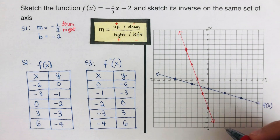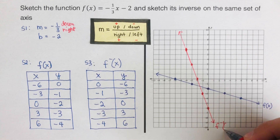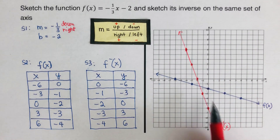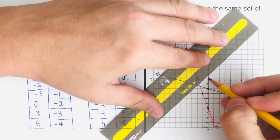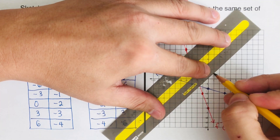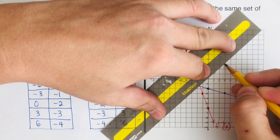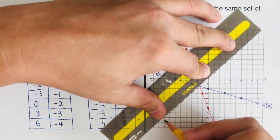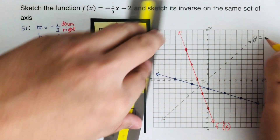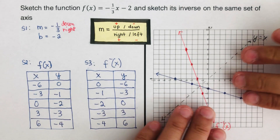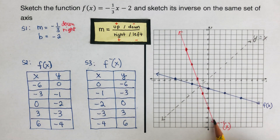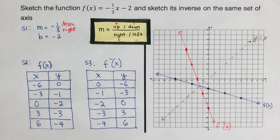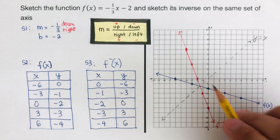We sketch the new dots, starting with (0, −6), then connecting them. This graph is labeled f⁻¹(x) — the inverse function. Dropping a line at y = x, we can see the two graphs are symmetric to each other. If we fold the graph along that line, the two lines match up, confirming they are inverses of each other.